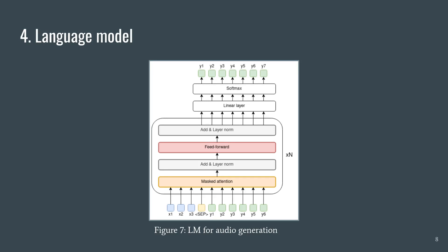Now let's move on to the core of the project: the language model. In this particular case, the language model is a transformer decoder-only model. Given an input sequence, it generates continuation tokens. In general, a model like this is fed input conditioning (the blue tokens), then a separator start token, and the model starts generating the green tokens. During training, we train the model to predict the next token — from the separator we predict Y1, from Y1 we predict Y2, and so on — in a single forward pass thanks to causal masking.